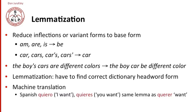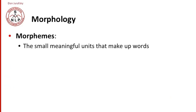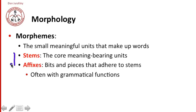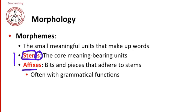This general topic of looking at parts of words leads us to morphology. Morphology is the study of morphemes, and a morpheme is the smallest unit that makes up a word. We usually distinguish two kinds of morphemes: stems, which are the core meaning-bearing units in a word, and affixes, the bits and pieces that adhere to the stem, which often have grammatical functions. On this particular slide, 'stem' is a stem and 's' is an affix.